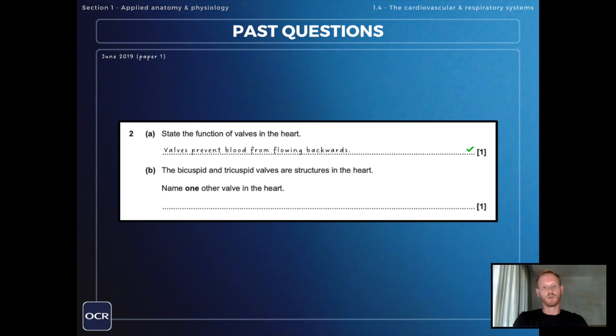And then the bicuspid and tricuspid valves are structures in the heart. Name one other valve in the heart. And you have two to choose from: we have the aortic or pulmonary valve, and these are both semilunar valves.